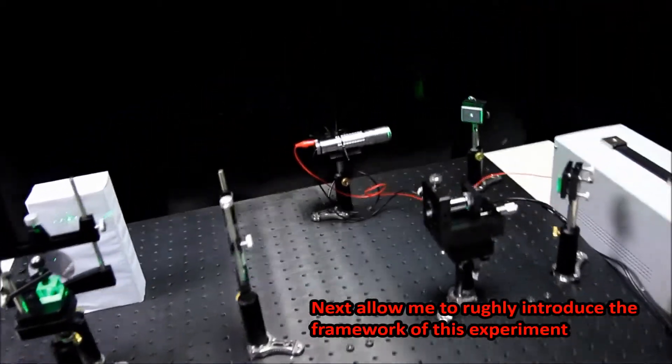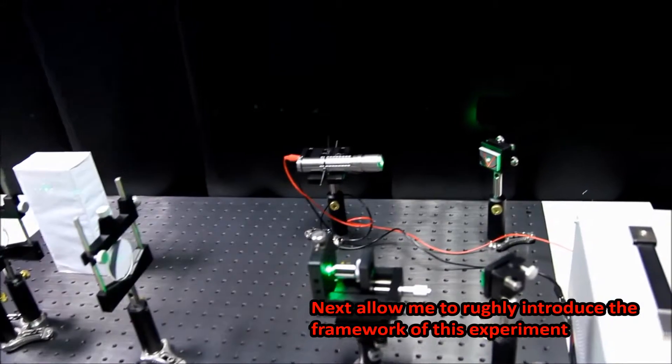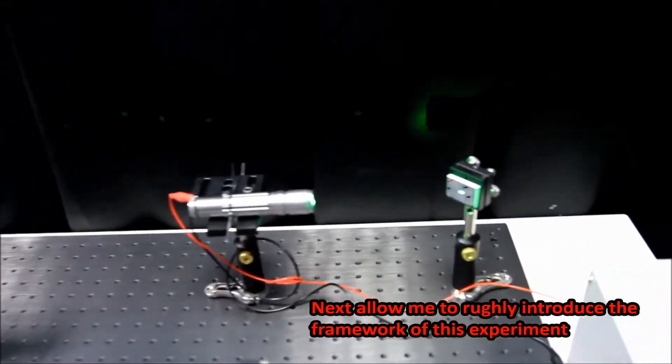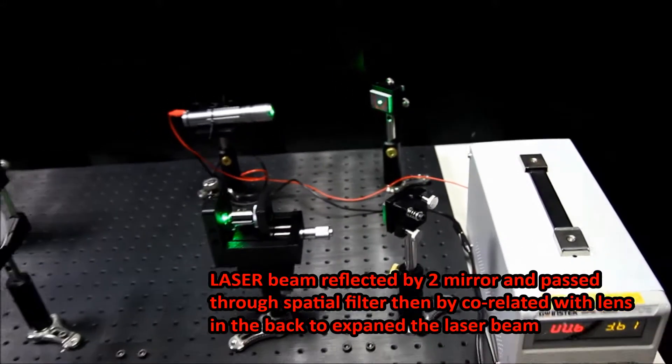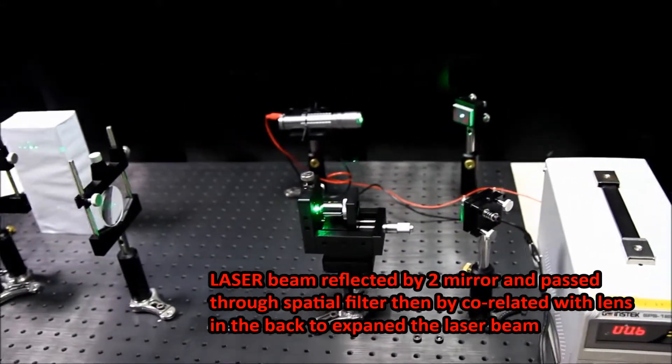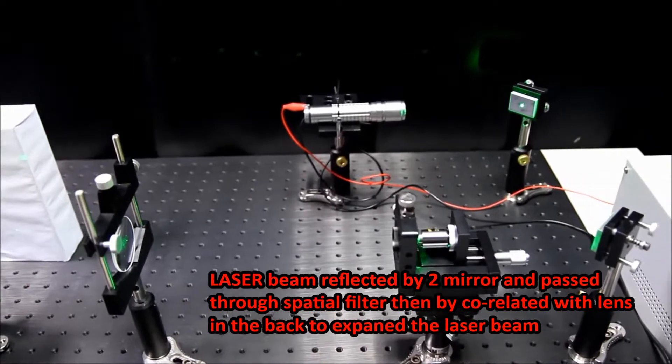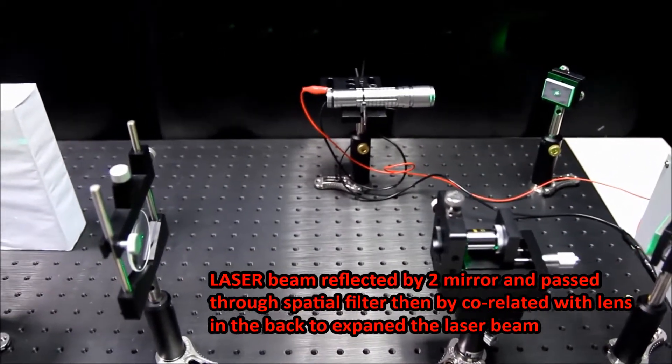Next, allow me to roughly introduce the framework of this experiment. Laser beam is reflected by two mirrors and passed through a spatial filter, then collimated with a lens in the back to expand the laser beam.